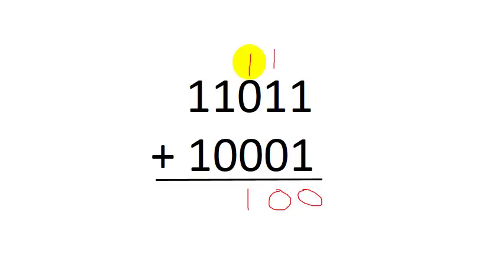Now we're just bringing down the 1 because it's 1 plus 0, which is 1. Again, the same for this. And lastly, we have 1 plus 1, which is again the decimal equivalent of 2, or the binary equivalent of 1 0.